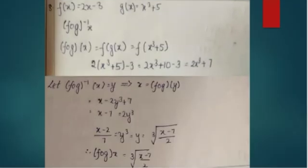After completing the seventh question the same way, now we see the eighth question: f(x) = 2x - 3 and g(x) = x³ + 5. First write the given information the same way as in the sixth question and apply composition.